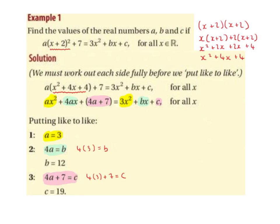We start matching up. We have a in front of the x squared and 3 in front of the x squared. We let these two equal each other — the x squared cancels out — and we get a is equal to 3. So what we're doing here is putting like to like.